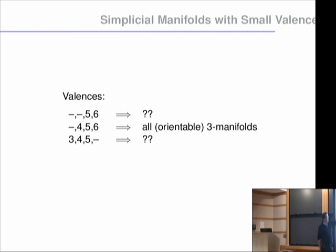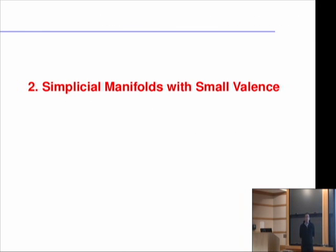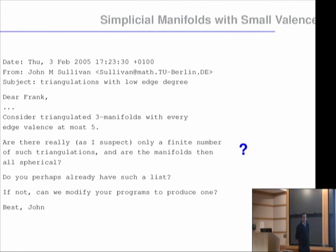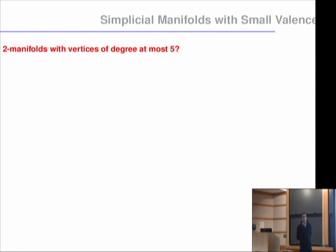Let's play around with that. What about valences 3, 4, 5? We look at simplicial manifolds with small valence. Before going to 3-manifolds, let me first look at the question John Sullivan once asked me: consider triangulated 3-manifolds with every edge valence at most 5. Are there only finitely many such triangulations, and are they all spherical? Before looking at 3-manifolds, let's look at 2-manifolds, which is a little simpler.